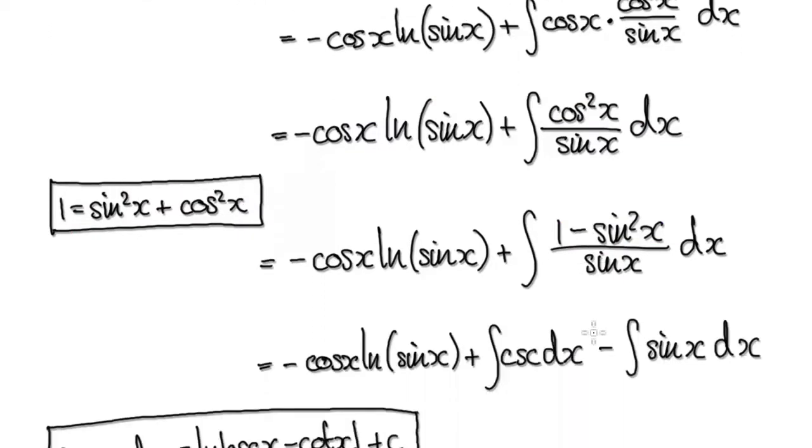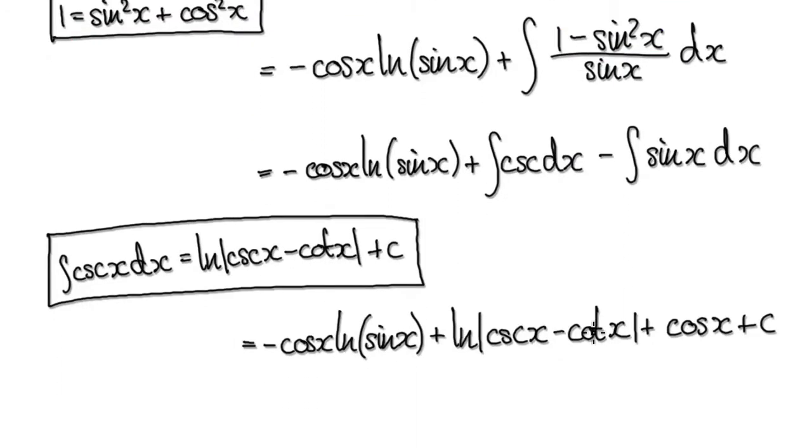So now break this up into two fractions. So this is one fraction here. That will then give you this. And then the other fraction would be this thing here. So that will then give you sine of x.